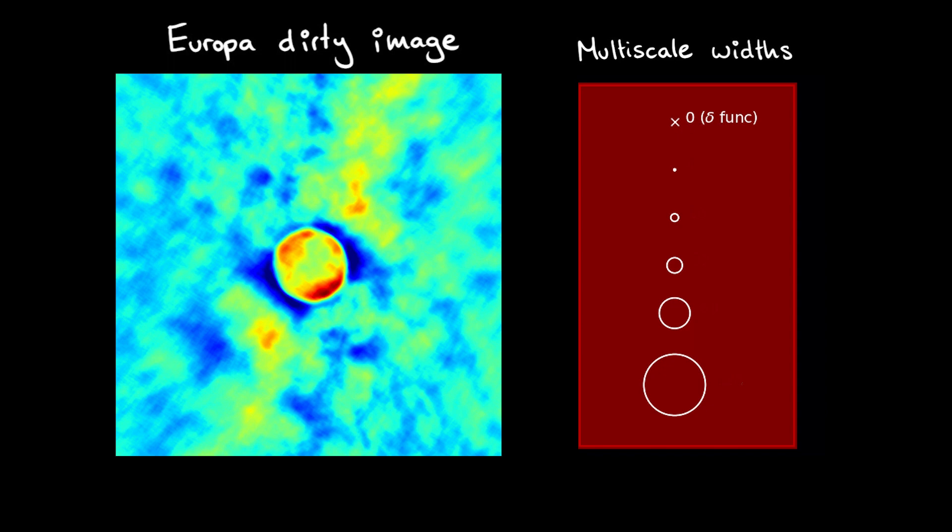Once you've determined the angular scales involved, you need to convert these size scales into pixels. You can use the cell size that you set for an image to determine the number of pixels for each size scale.